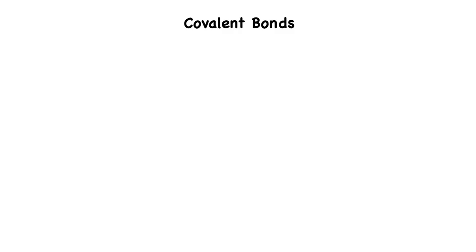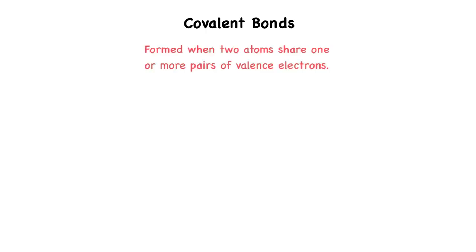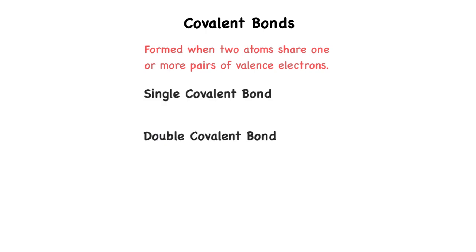Let's dive right in. Covalent bonds are formed when two atoms share one or more pairs of valence electrons. The strength of the bond depends on the number of shared electrons. Covalent bonds can be single covalent bonds, double covalent bonds, or triple covalent bonds.